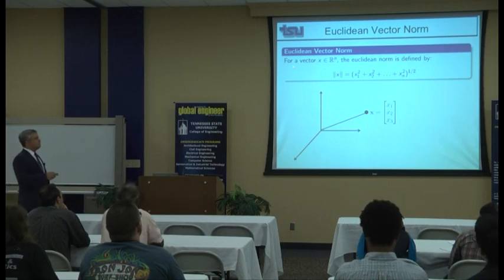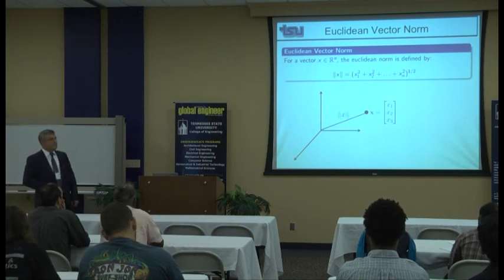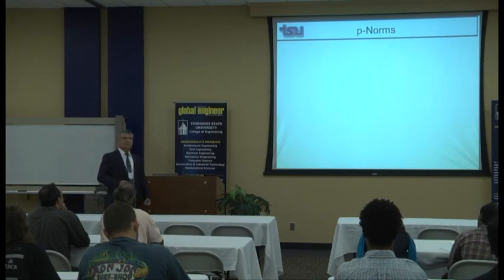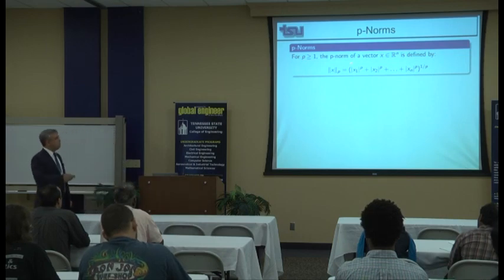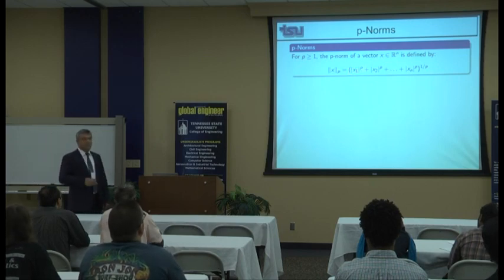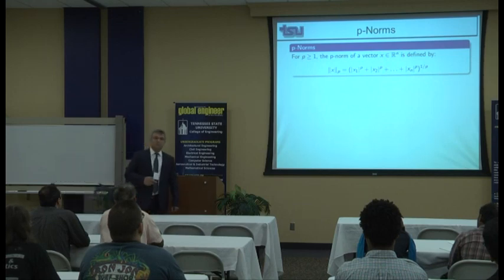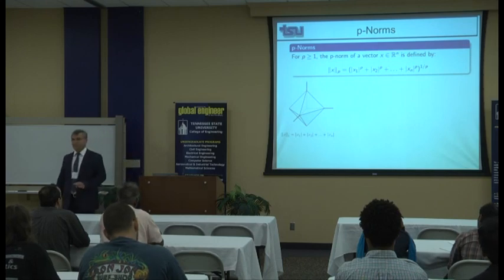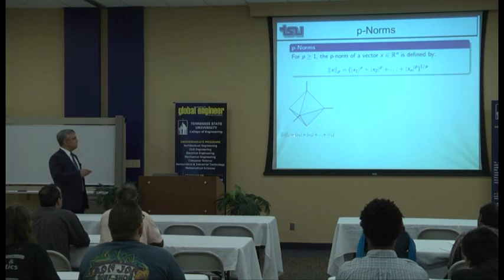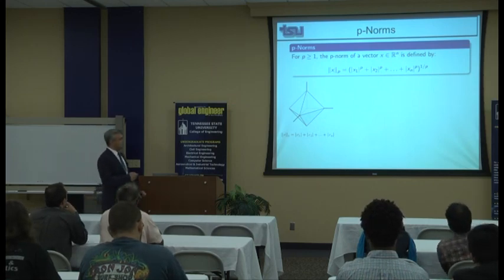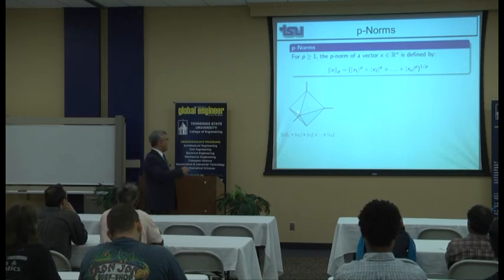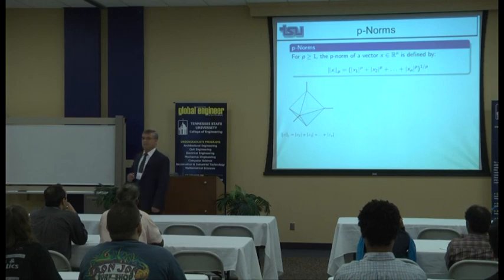Everybody is familiar with the Euclidean norm. In Rn, we define the Euclidean norm — the length of vector x. In general, we have p-norms. The p-norm of a vector is defined as the sum of the p-th power of elements, then taking the p-th root. The one-norm is simply the absolute sum of elements. Geometrically, the one-norm unit ball is a diamond shape: all points on this surface have exactly the same one-norm equal to some constant c.